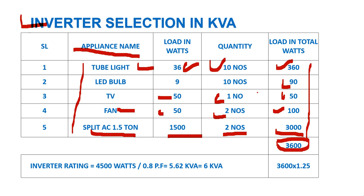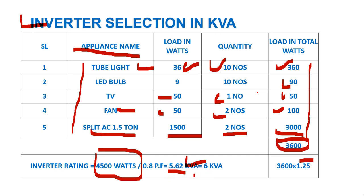Now add 20% extra for future load expansion, which brings the total to approximately 4320 watts. After considering the power factor, the total comes to around 5620 VA. Dividing by 1000 gives 5.62 kVA — so you round up and purchase a 6 kVA inverter from the market. That is how you select the correct inverter rating for this load.